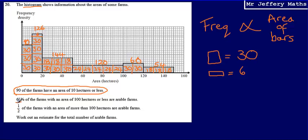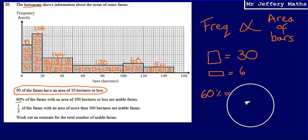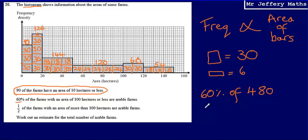Using this information: 60% of the farms with an area of 100 hectares or less are arable. The total number of farms with 100 hectares or less is 120 + 144 + 126 + 90 = 480. So we need 60% of 480. Added to that, we need half of the farms with more than 100 hectares, which is half of 60 + 54 = half of 114.